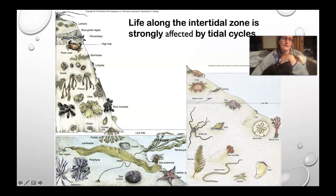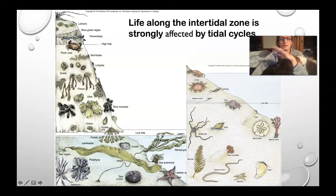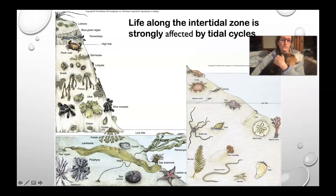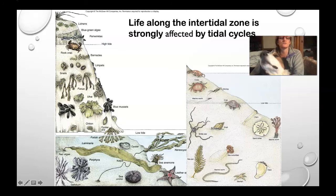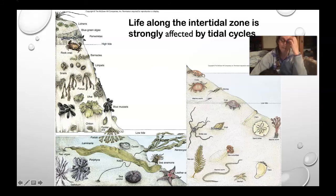Life in the intertidal zone — the organisms there are specifically adapted to be there. There's a lot of energy from the ebb and flood tides coming in and out, with a lot of water moving through the system. Many of these organisms have a low profile and are sessile — they don't move, like oysters. Others, like sea stars, are low to the ground, have suction cups, are suctioned to the seafloor, or bury themselves into the substrate.